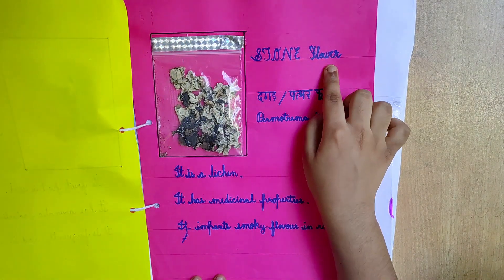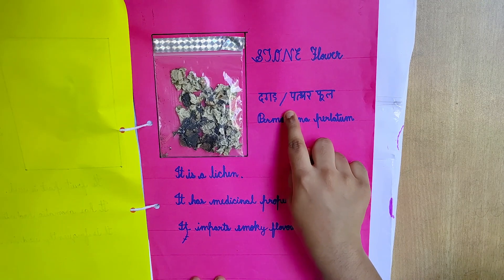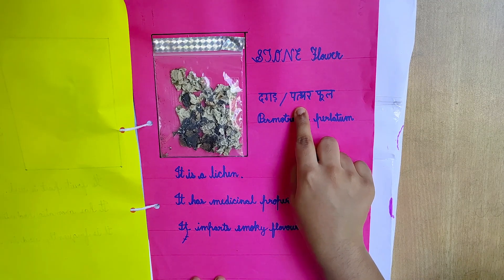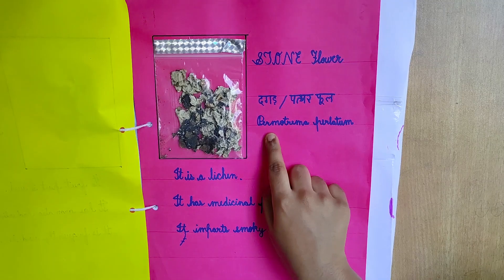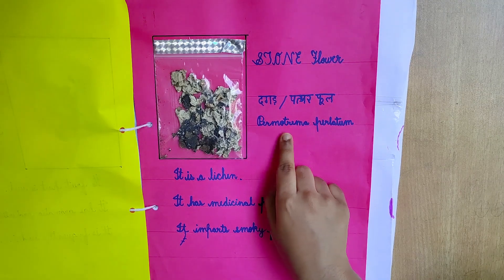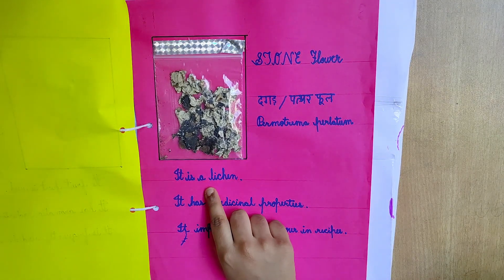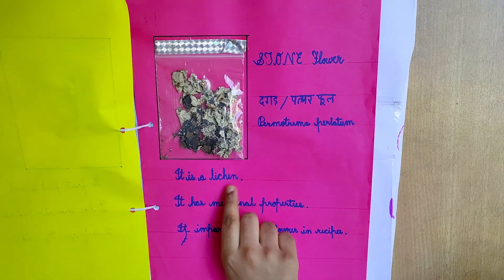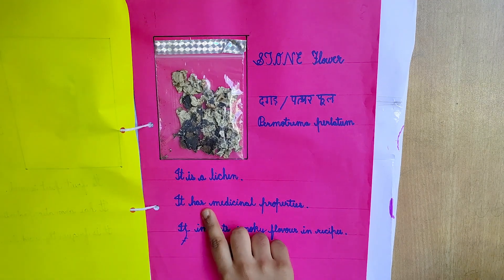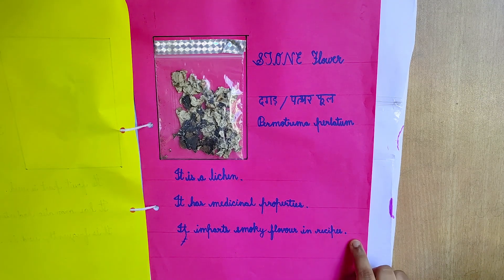This is stone flower. It is also known as dagar or pattharphool in Hindi language. Its scientific name is Parmotrema perlatum. It is a lichen. It has medicinal properties. It imparts smoky flavoring to recipes.